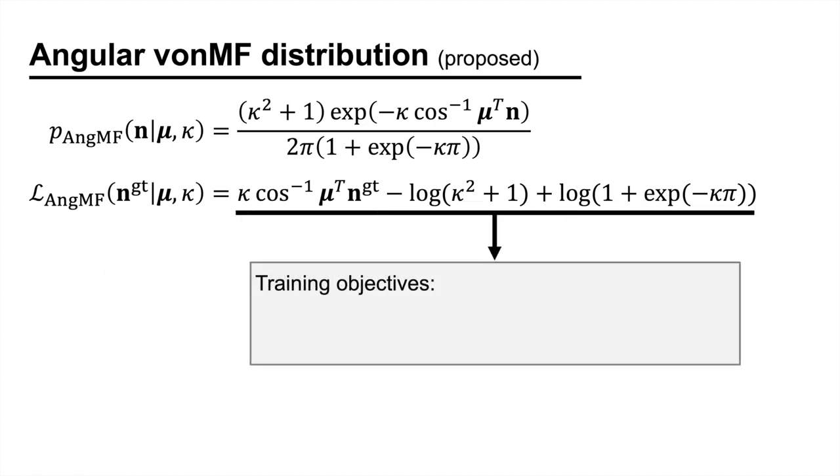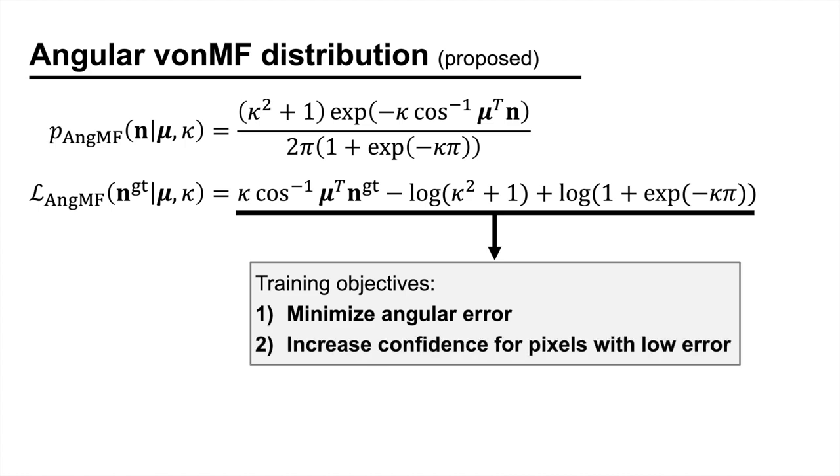In other words, the network has two training objectives. Firstly, it will try to minimize the angular error. Secondly, it will increase the confidence for the pixels with low error.